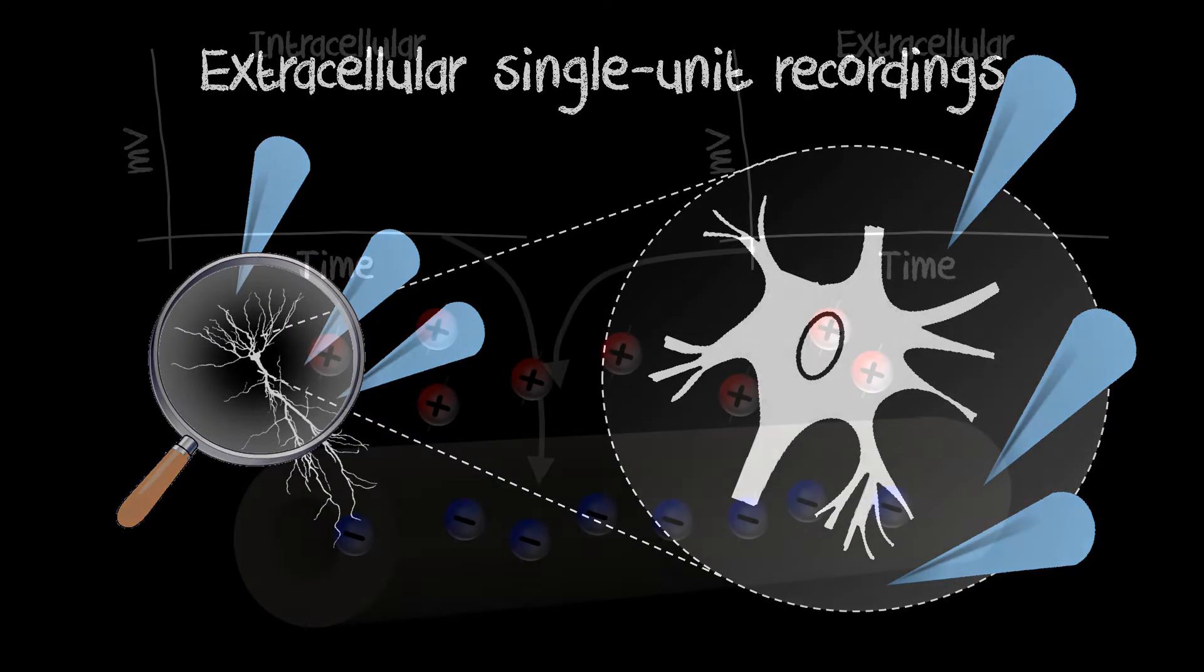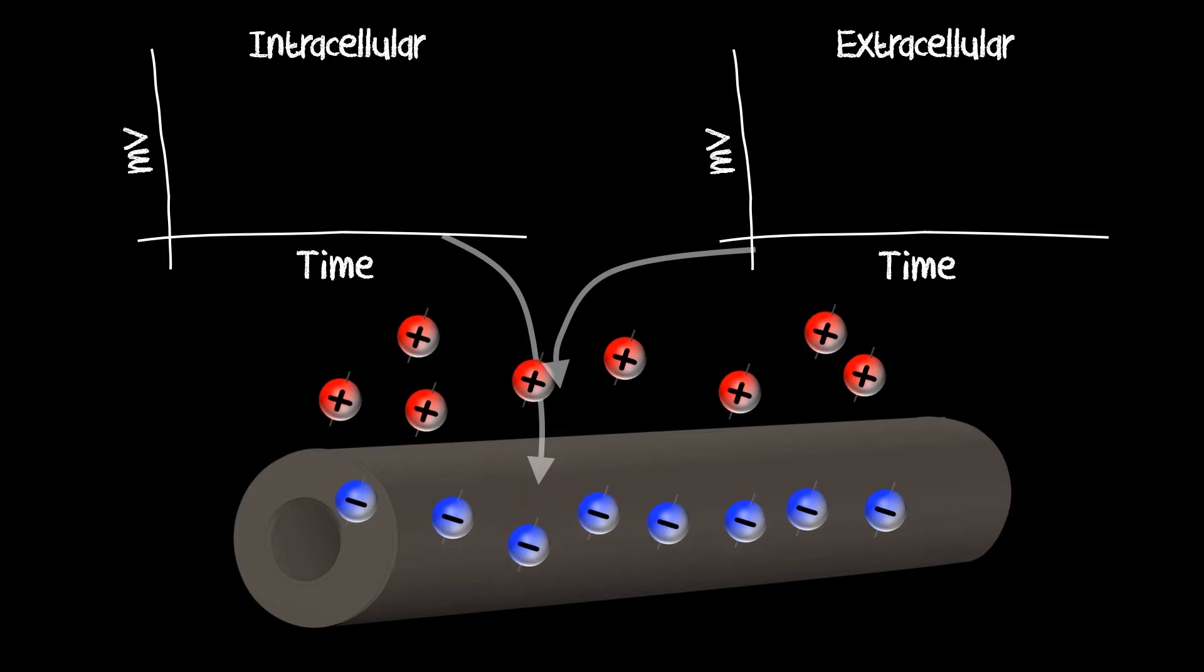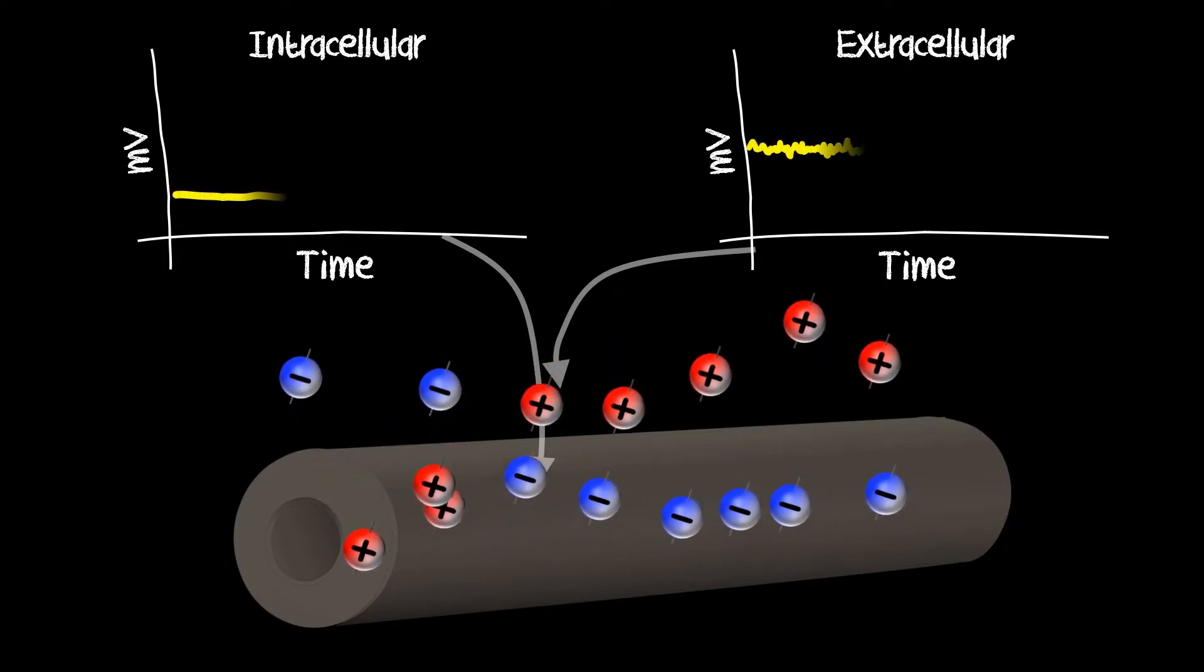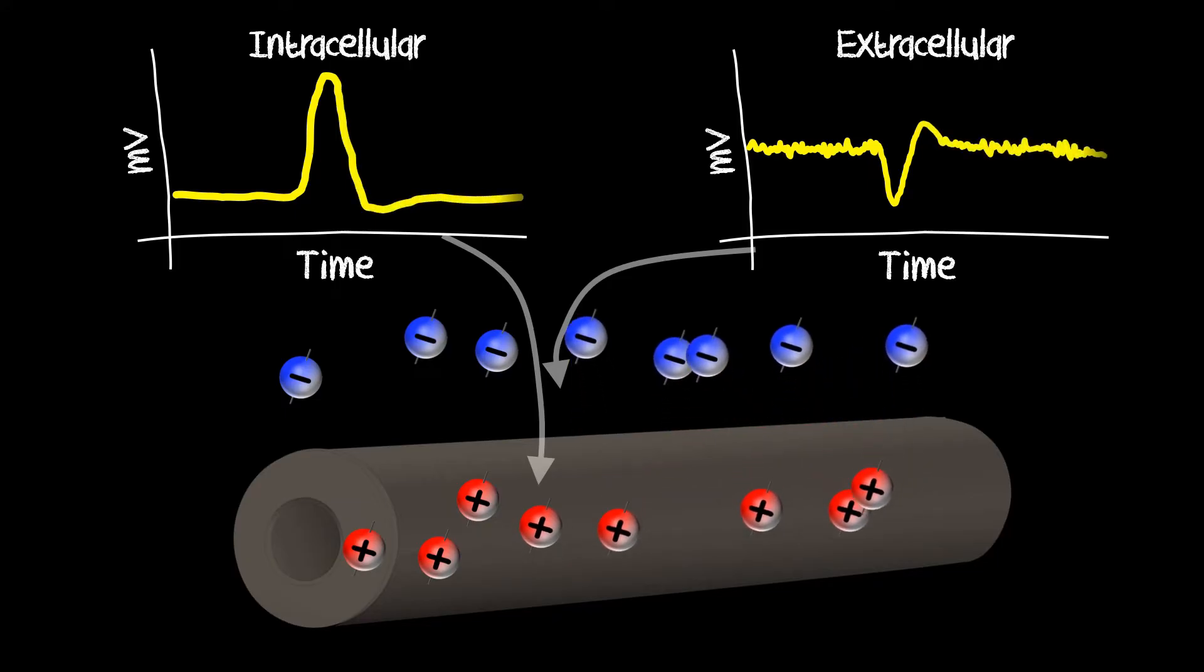So, how do extracellular recording signals look like? When an action potential propagates from one neuron to the other, the influx of sodium creates a positive charge within the axon. Thereby, the outside of the axon becomes negatively charged. Intracellularly, the action potential therefore creates a characteristic positive deflection, but extracellular recordings show a negative deflection.